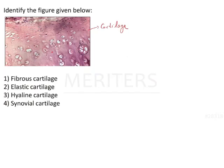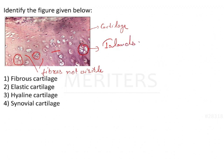To identify the figure shown: the matrix is visible but the fibers are not visible, and you can see islands of chondrocytes. Fibers are not visible and there are islands of chondrocytes — this gives the glass-like appearance of hyaline cartilage. So the answer is option three, hyaline cartilage. For more information you can see the explanation given at the bottom.